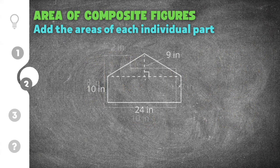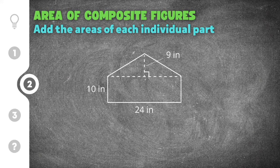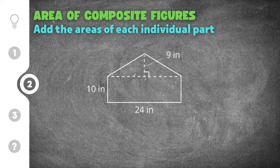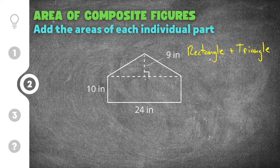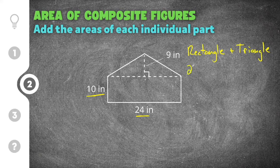Moving on to the next practice problem, this composite figure is a little different — this time we have a rectangle and a triangle. The area of the rectangle and the area of the triangle will add up to the area of our composite figure. For the rectangle, the height is ten and the base is twenty-four, so the area is twenty-four times ten.